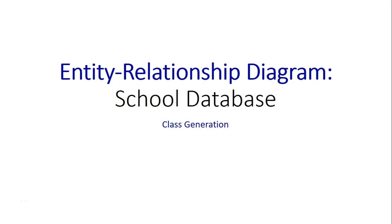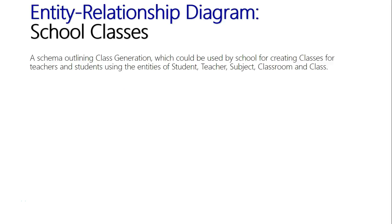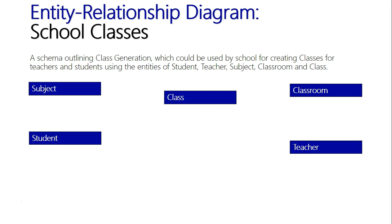Entity relationship diagram: school database class generation. We're going to look at an actual schema for the way classes might be generated on a school database using a variety of entities. We're going to use to outline class generation a variety of entities: student, teacher, subject, classroom, and class. Let's get these entities up here so we can see the five different entities.